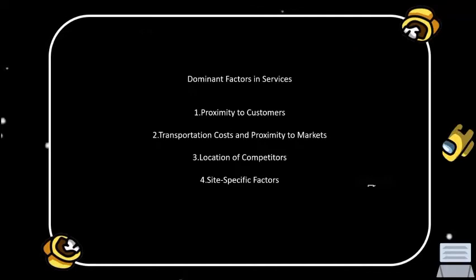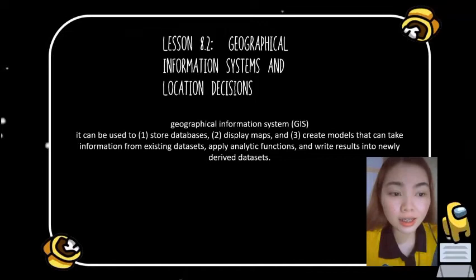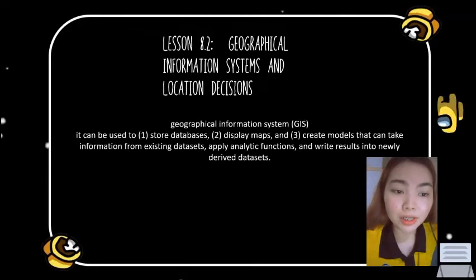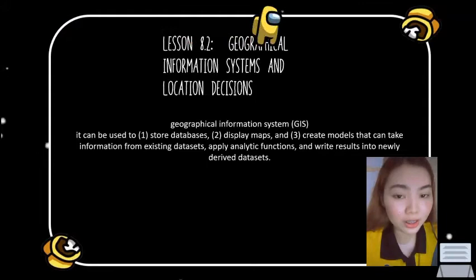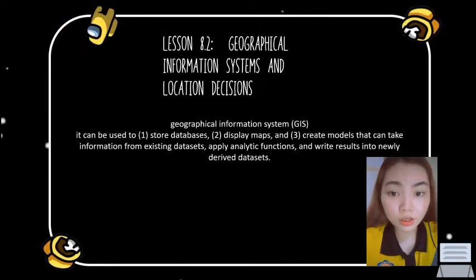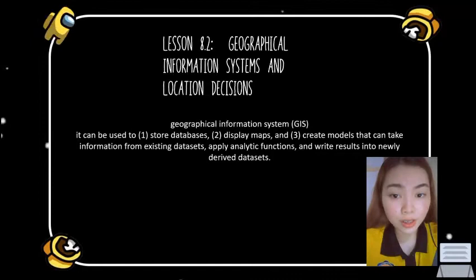A Geographic Information System, or GIS, is a system of computer software, hardware, and data that firm's personnel can use to manipulate, analyze, and present information relevant to a location decision. GIS is a computer system for capturing, storing, checking, and displaying data related to positions on Earth's surface.